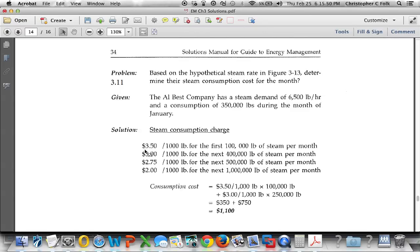It shows us the steam consumption charges from page 121. So the first thousand pounds, we're going to see that we're going to be paying $3.50 for that thousand pounds for the first hundred thousand pounds. So it's 350 times 100,000 plus the next 250,000 pounds are going to come out of the second rate, which is the $3 per thousand pound rate. We add the two together, it comes to $1,100. Pretty straightforward. You guys should be able to handle that one no sweat.